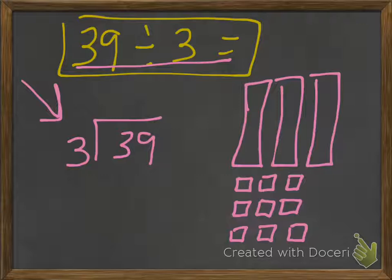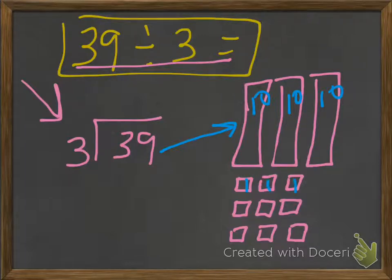So 39 is really three tens—ten, ten, ten—and of course we have nine ones.